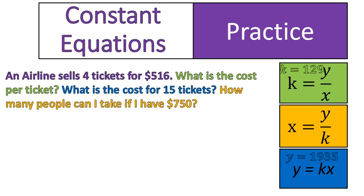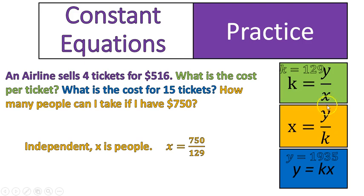And the third question, how many people can I take if I have $750? This is finding out how many people, which is x, the number of tickets, essentially, that you're buying. And to do this, you will do division. Using this third equation, your cost divided by the constant will tell you how many tickets you can purchase. I purposely did this question so that it did not match up. It didn't work out evenly. Your answer would be 5.814.